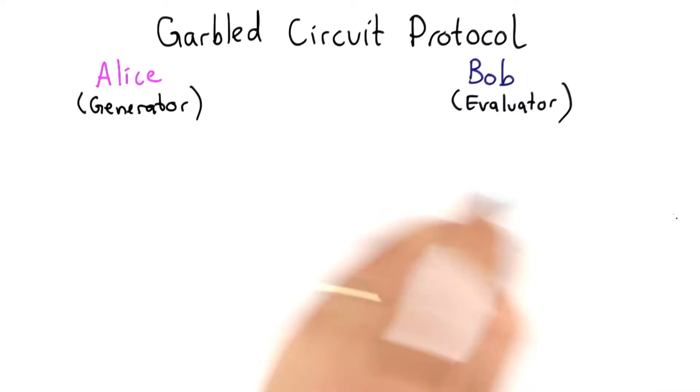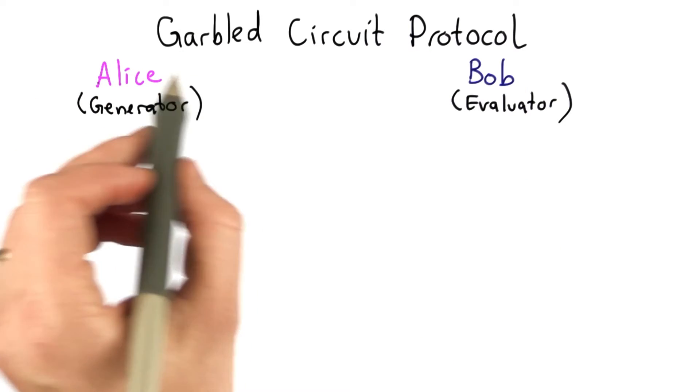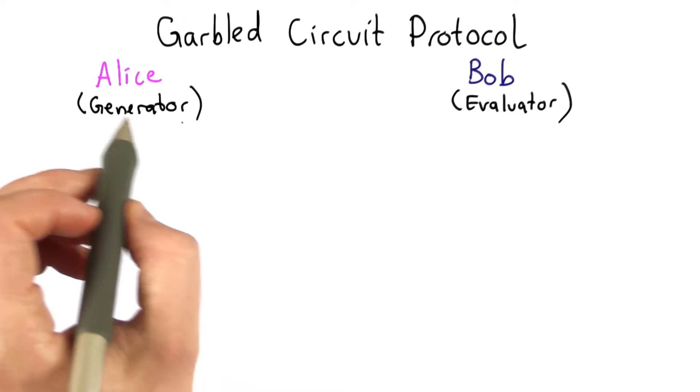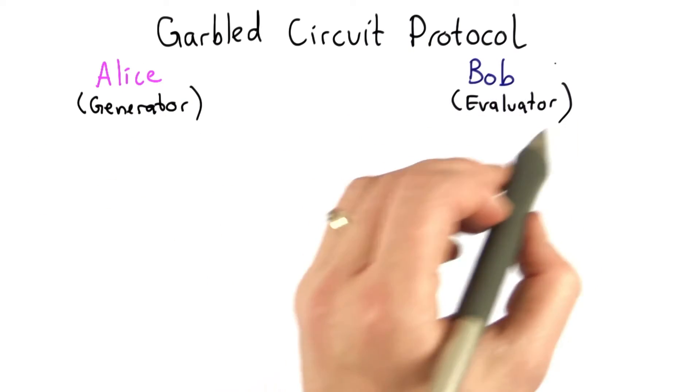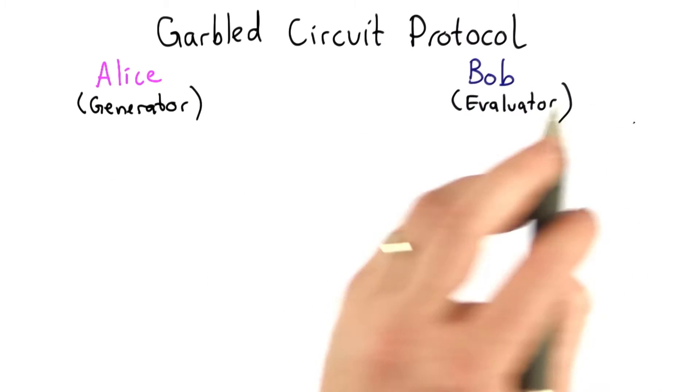So here's how this works as a protocol. We have two participants. We'll call Alice the generator. That means she's going to make the circuit, and Bob the evaluator. That means he's going to evaluate the circuit.